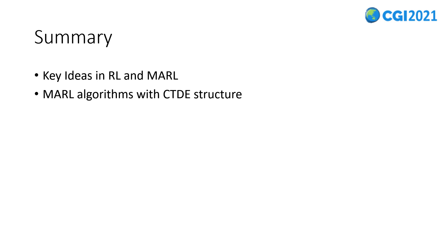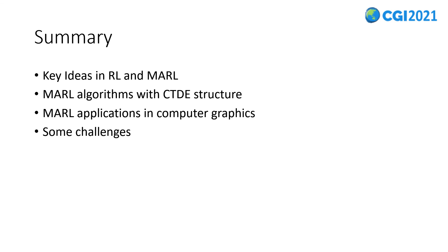In this paper, we first introduce some key ideas in reinforcement learning and multi-agent reinforcement learning. Then we review some typical MARL algorithms with centralized training and decentralized execution architecture. We also review some exciting MARL applications in the field of computer graphics. Finally, we discuss some challenges that need to be tackled. Like many other machine learning applications, multi-agent reinforcement learning in computer graphics is still very young, and many things are still to be explored. We expect more breakthroughs in the foreseeable future. This is the end of my presentation — thanks for listening.